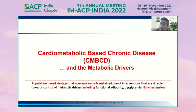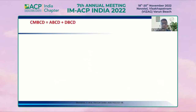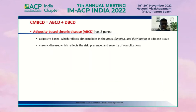We need to control the metabolic drivers including adiposity, dysglycemia, and hypertension — A, B, and C. It is A for adiposity and A1C, B for blood pressure, and C for dysglycemia. CMBCD is ABCD plus DBCD. ABCD reflects adiposity in terms of mass, function, and distribution. The chronic disease component reflects the risk, presence, and severity of complications. DBCD reflects the full spectrum from pre-diabetes and insulin resistance to overt diabetes and diabetic complications.